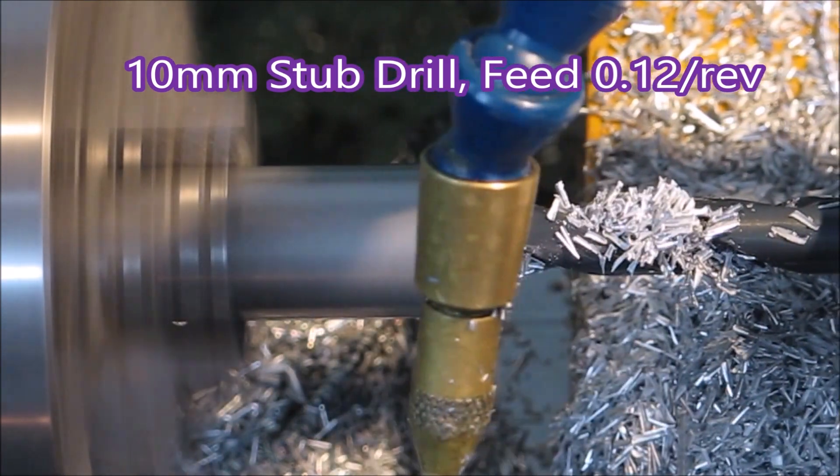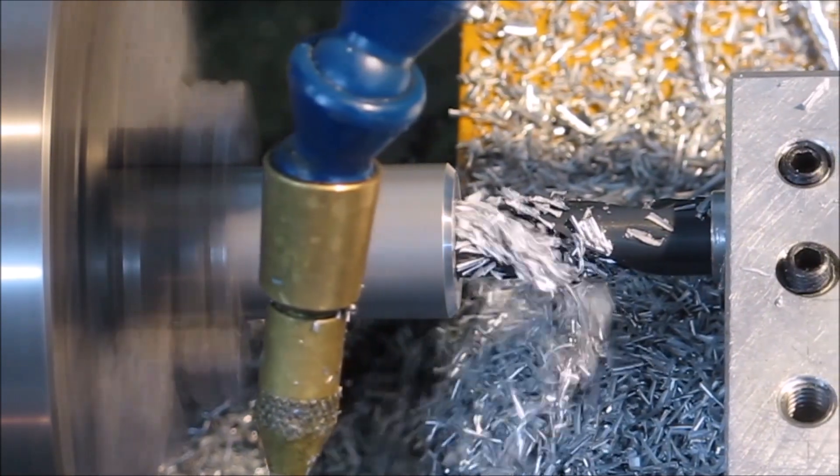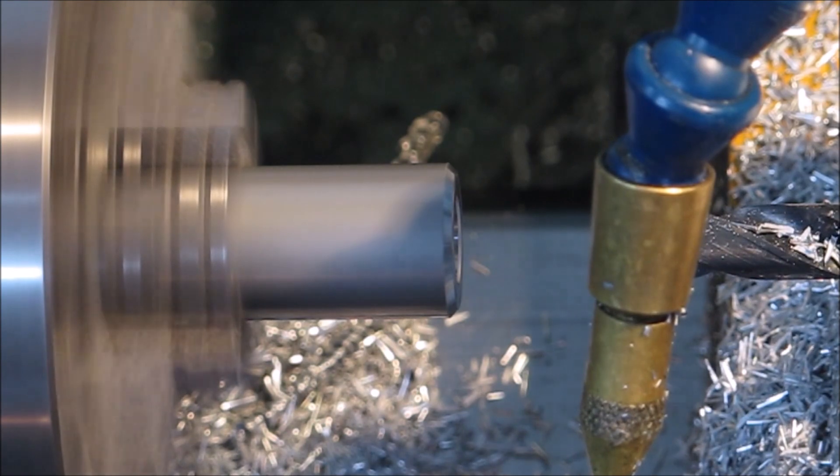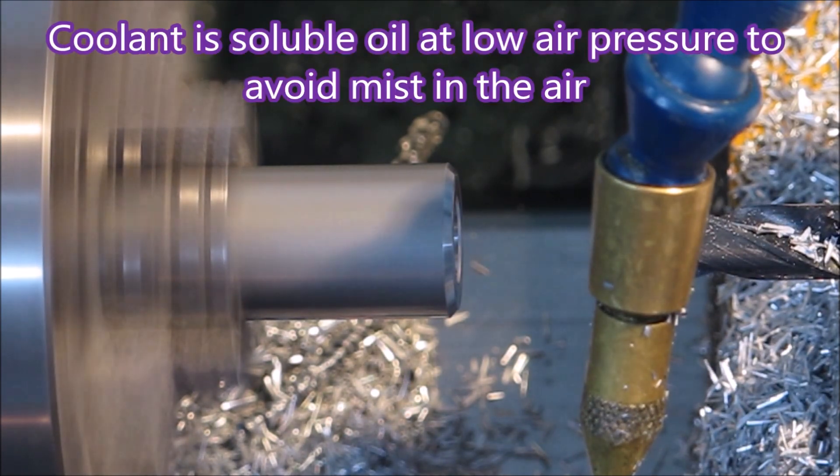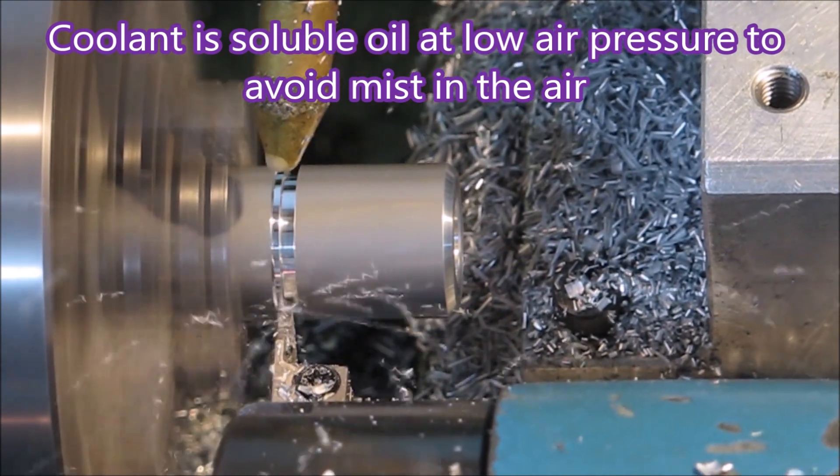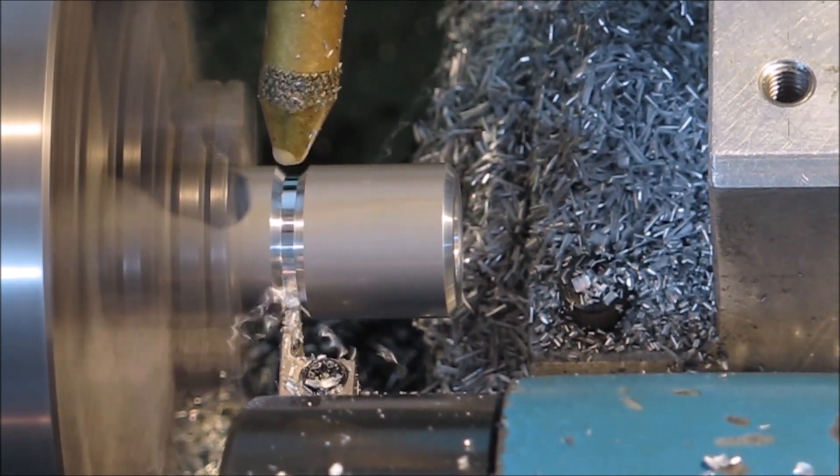So this is just a standard stub drill, feeds 0.12 per rev. It's cutting really nicely. The coolant I use is just soluble oil, and I keep the air pressure down or the air becomes laden with mist which is not very good for one's health.